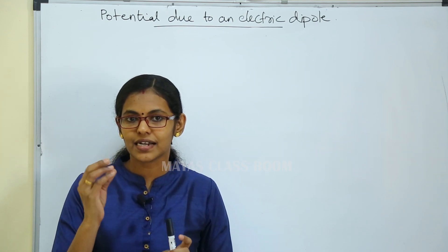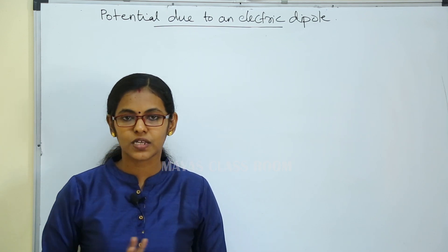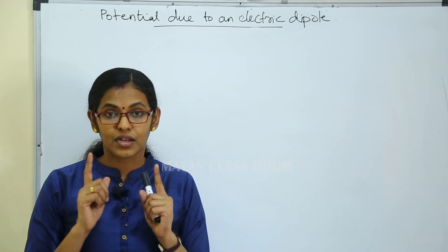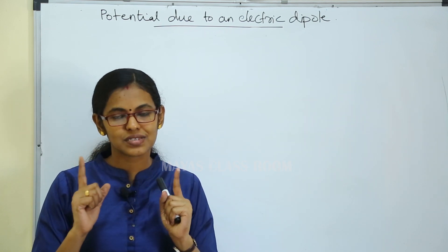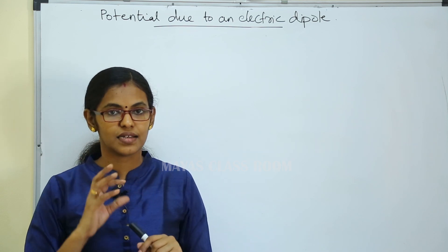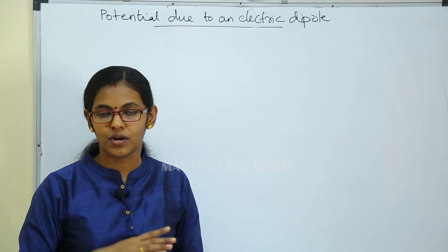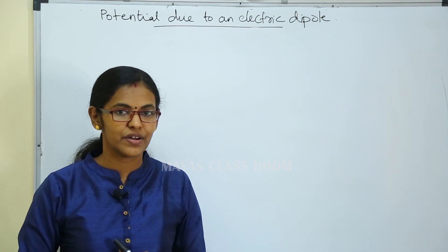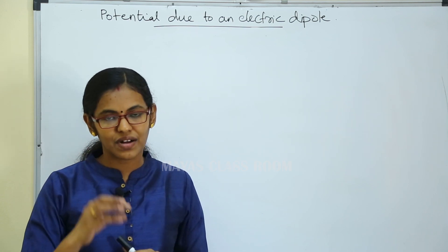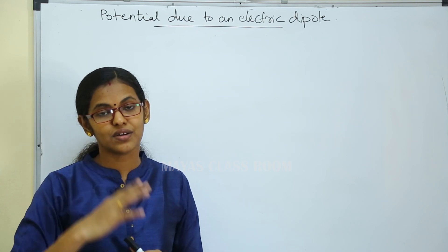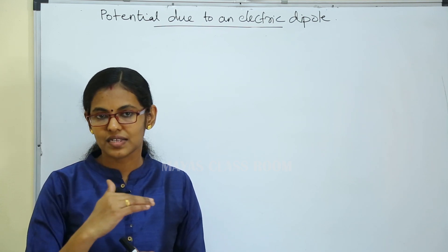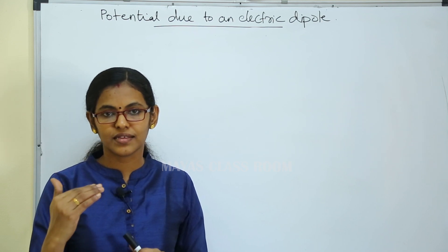What is Electric Dipole? Two equal and opposite charges separated by a small distance — that is known as Electric Dipole. Electric Dipole has a dipole moment, which is the product of the magnitude of the charges and the distance between them.